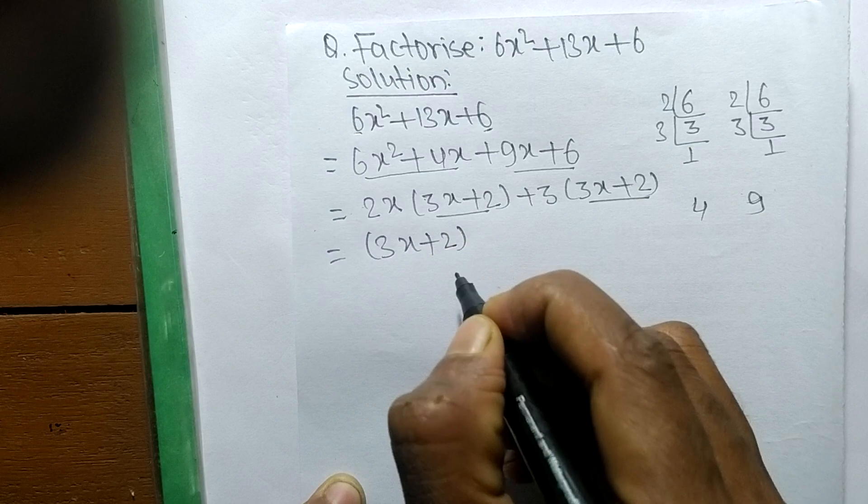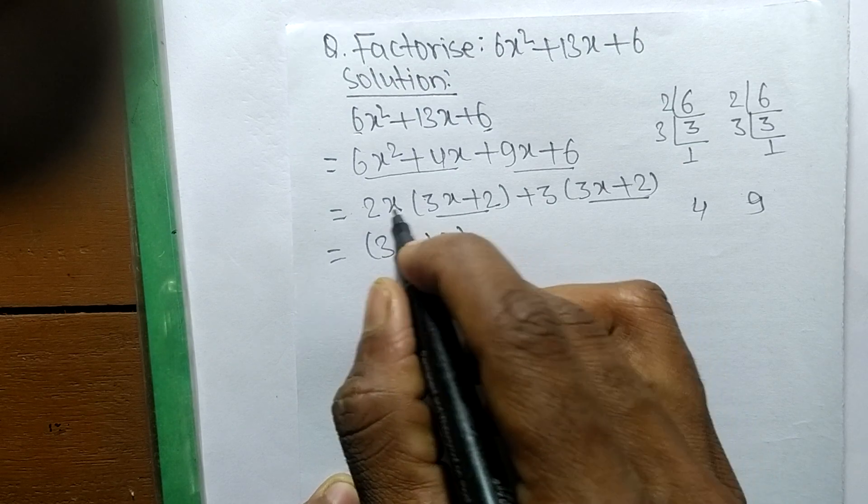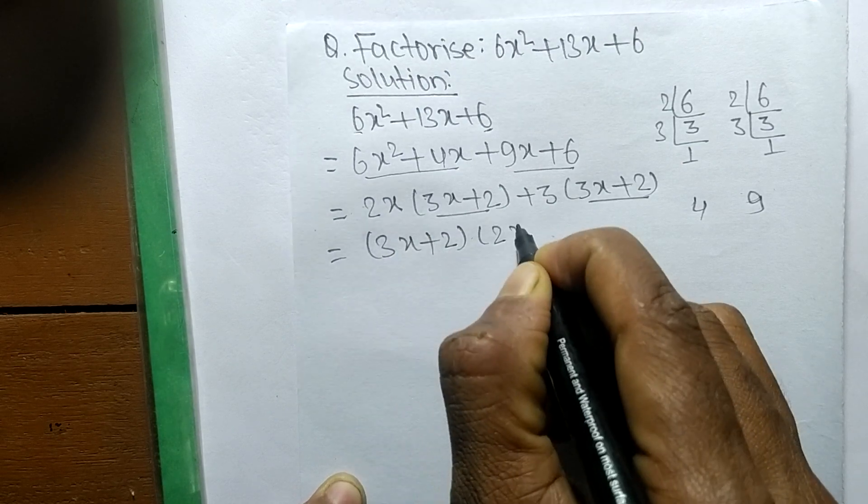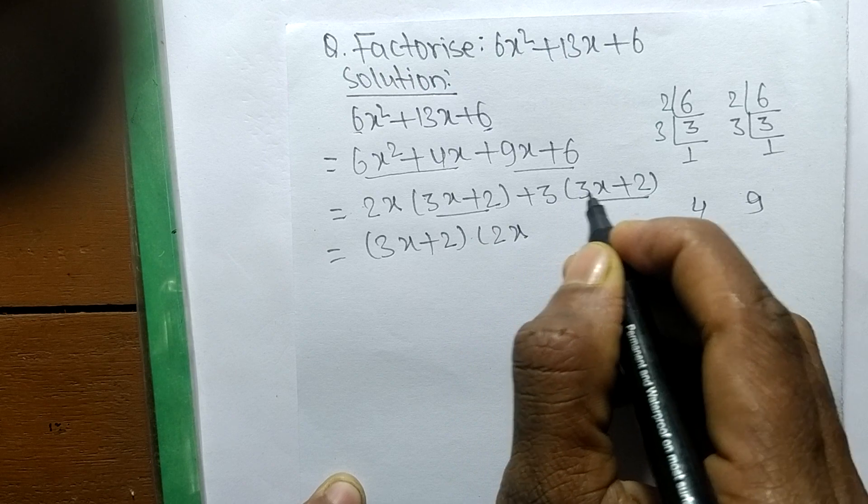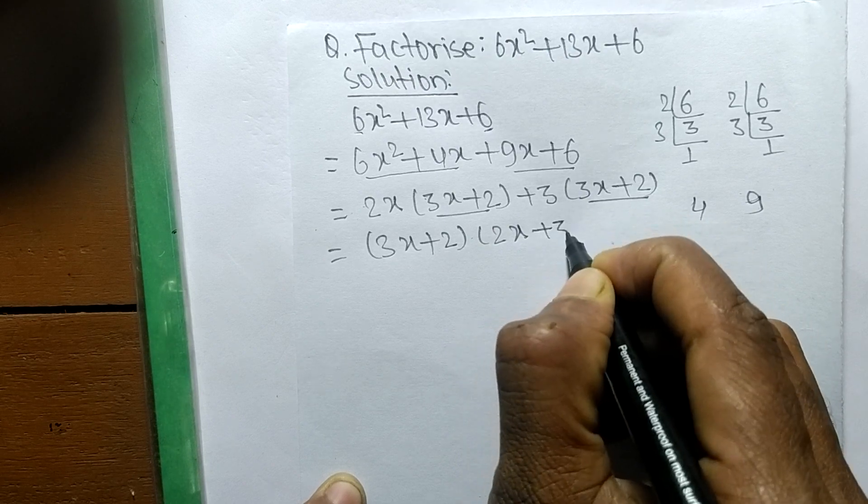So 3x + 2 is the common. Like as in the first part the remaining is 2x. Like as in second one the remaining is plus 3.